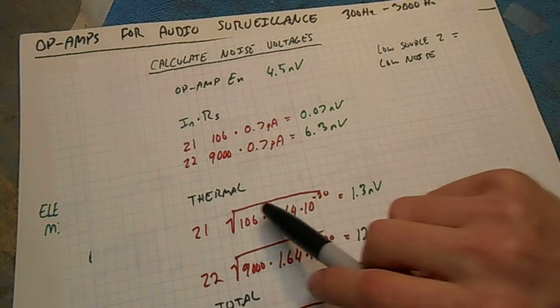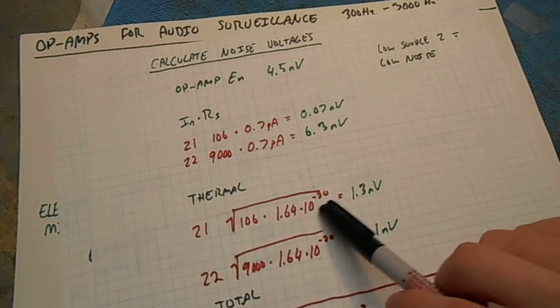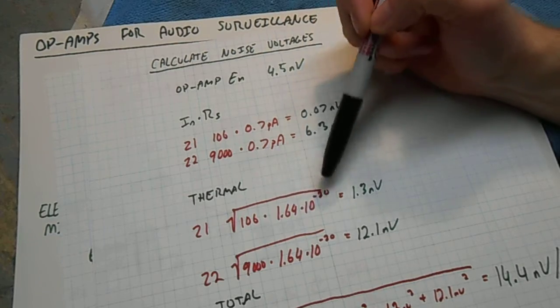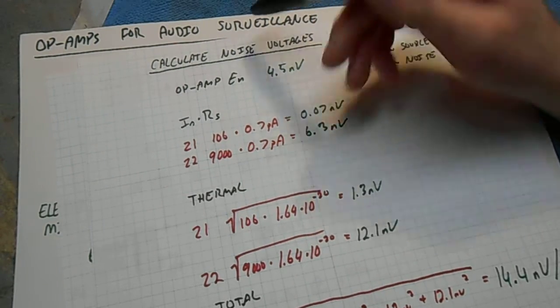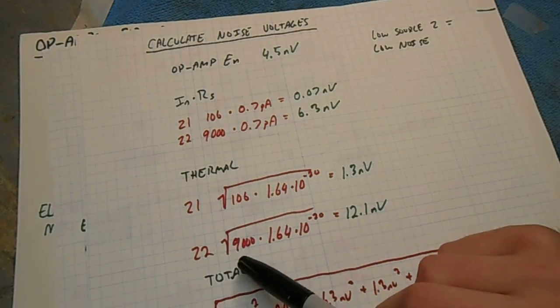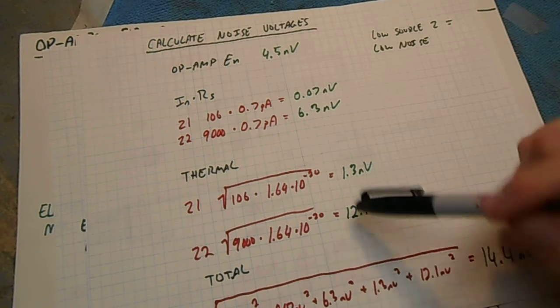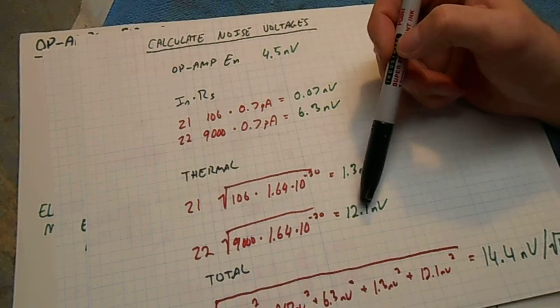Now we need to calculate the thermal noise with those two impedances. The square root of 106 times 1.64 times 10 to the negative 20th, we get 1.3 nanovolts. And for our second impedance value, 9000 times 1.64 times 10 to the negative 20th, square root of that, 12.1 nanovolts.